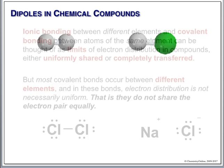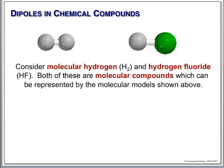Most covalent bonding is somewhere in between pure covalent and a full ionic compound. Let's look at a couple of examples. Let's look at molecular hydrogen and compare this with hydrogen fluoride. These are ball-and-stick models of the two. Hydrogen is simply diatomic — it's two hydrogens stuck together.